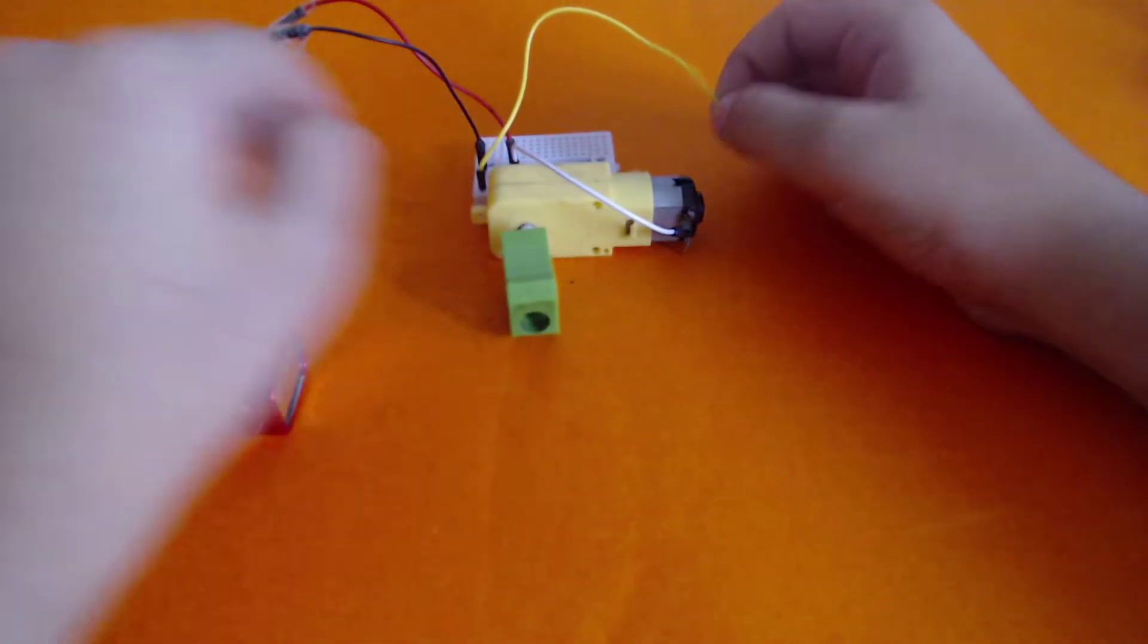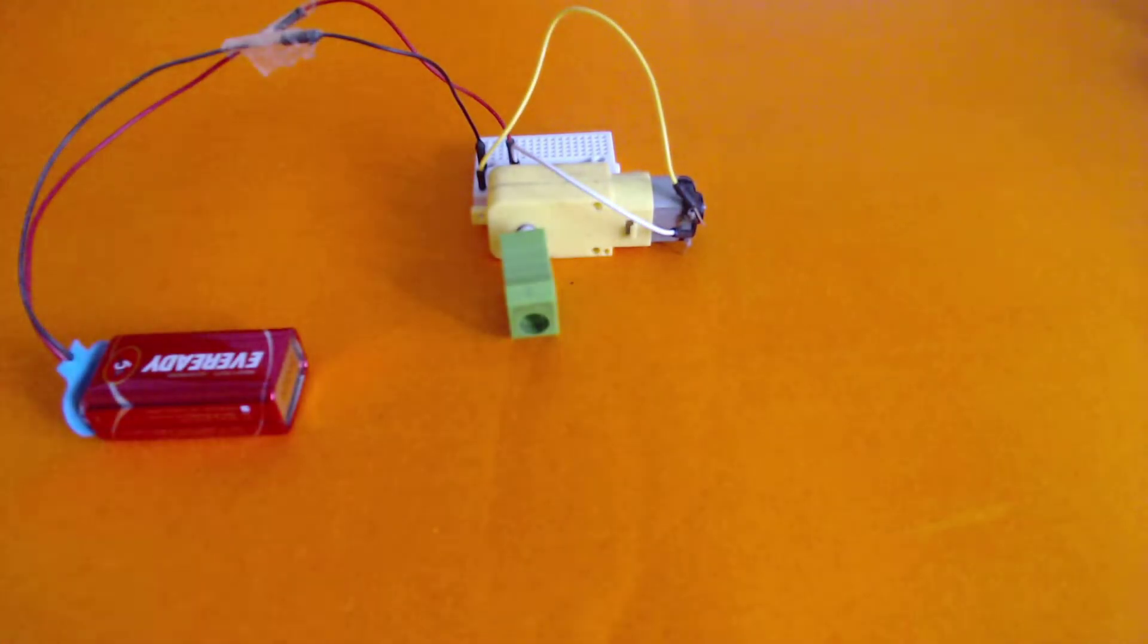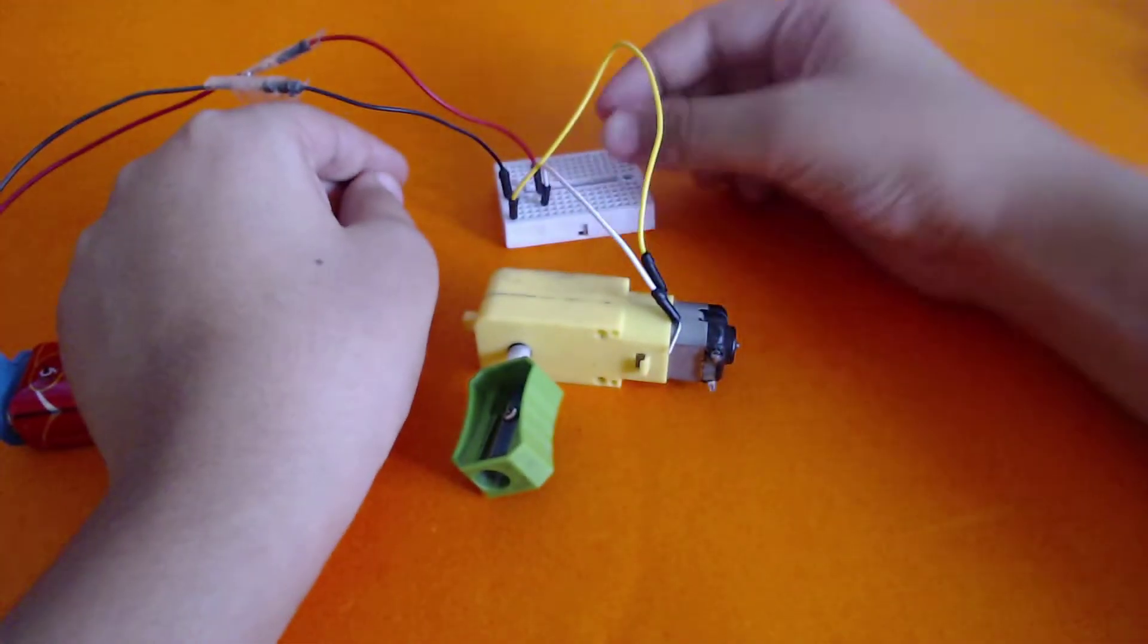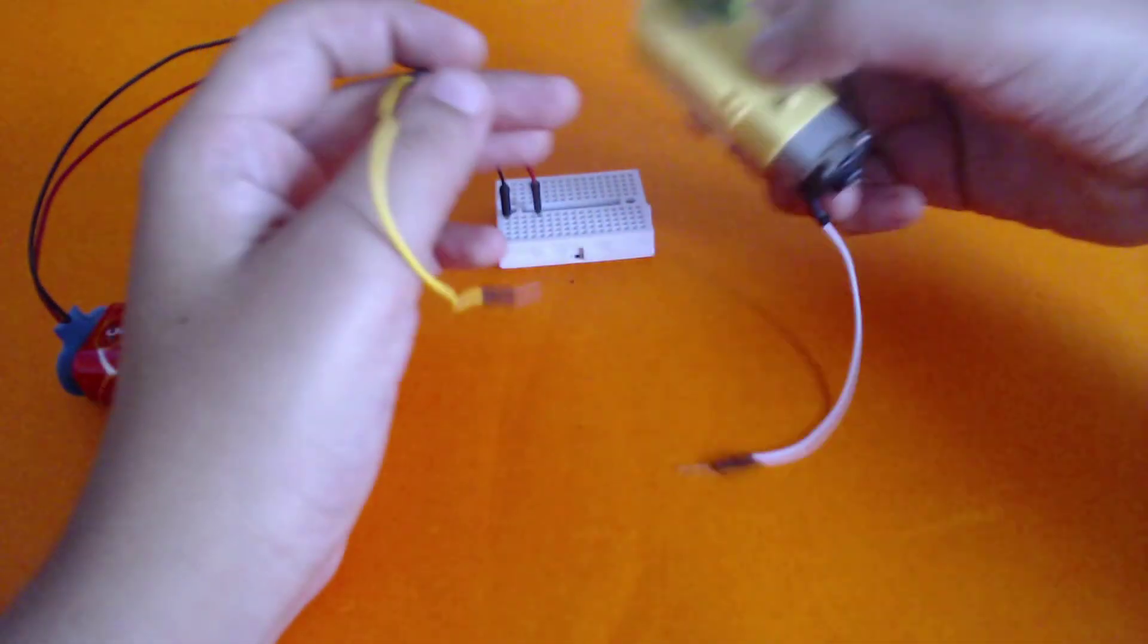Now this goes anticlockwise, so if we put our pencil over here, it'll sharpen itself. First we know this works, so we'll disconnect these both wires so that I don't burn my hand in the process.